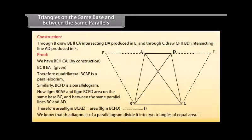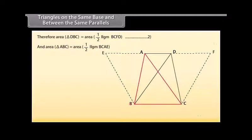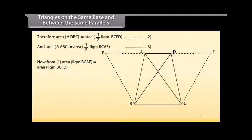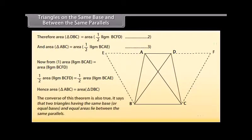We know that the diagonals of a parallelogram divide it into two triangles of equal area. Therefore, area of triangle DBC equals half the area of parallelogram BCFD [Mark as 2], and area of triangle ABC equals half the area of parallelogram BCAE [Mark as 3]. From statement 1, area of parallelogram BCAE equals area of parallelogram BCFD, which implies half of BCFD equals half of BCAE. Hence, area of triangle ABC is equal to area of triangle DBC. The converse of this theorem is also true: two triangles having the same base or equal bases and equal areas lie between the same parallels.